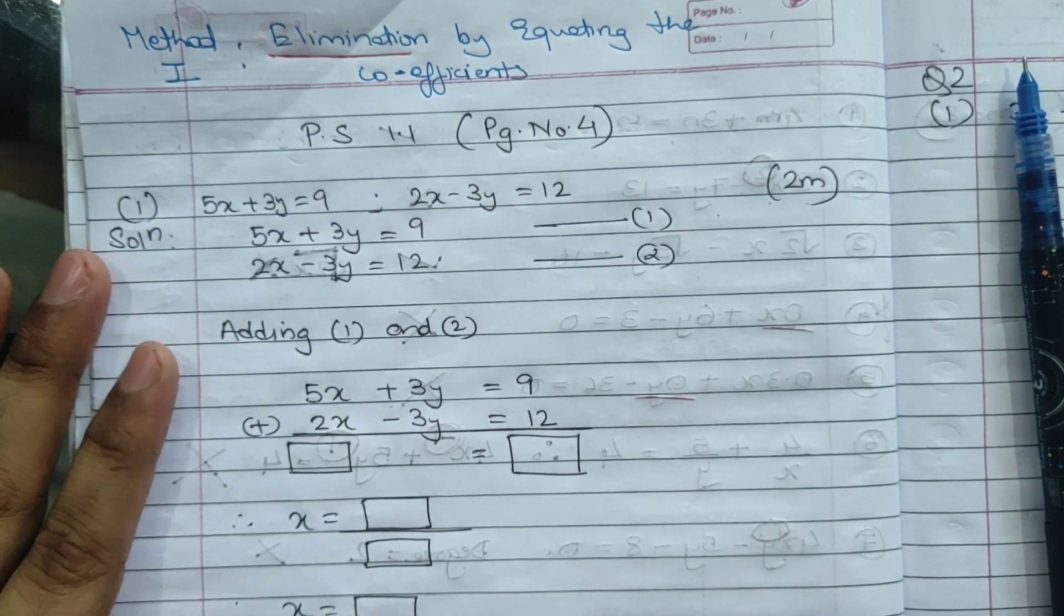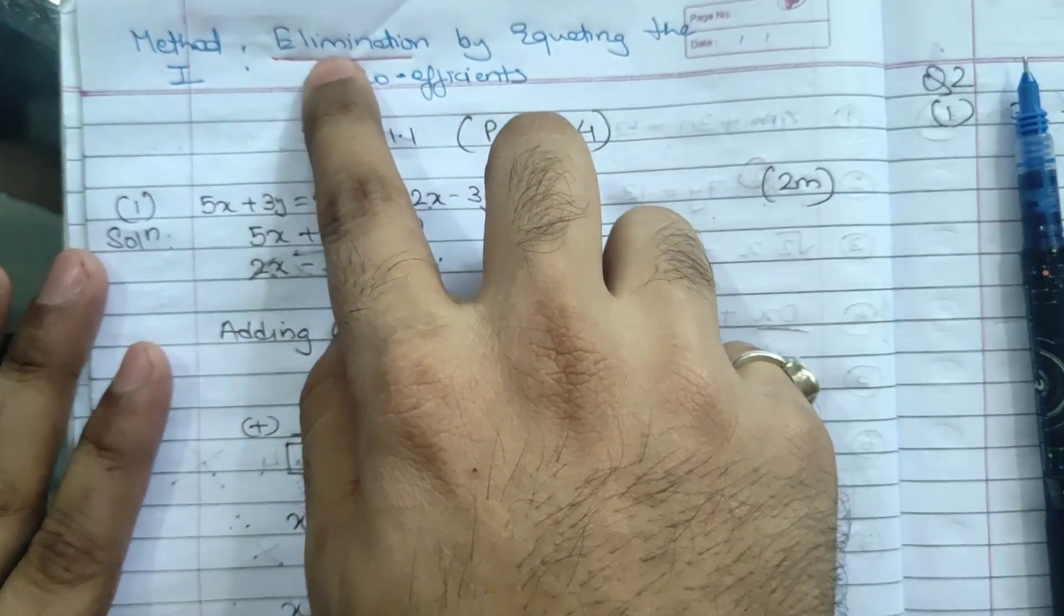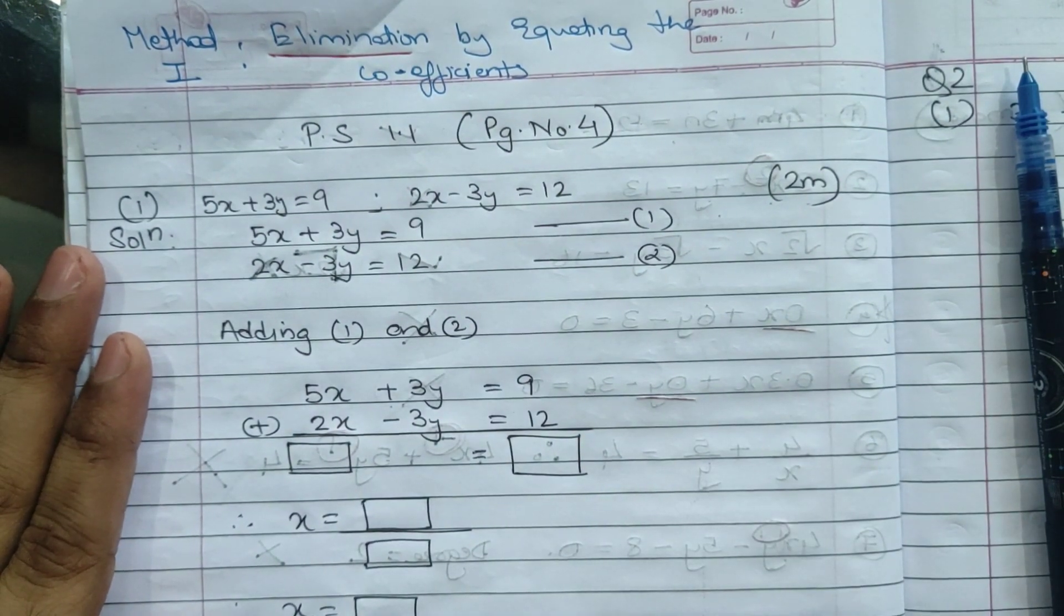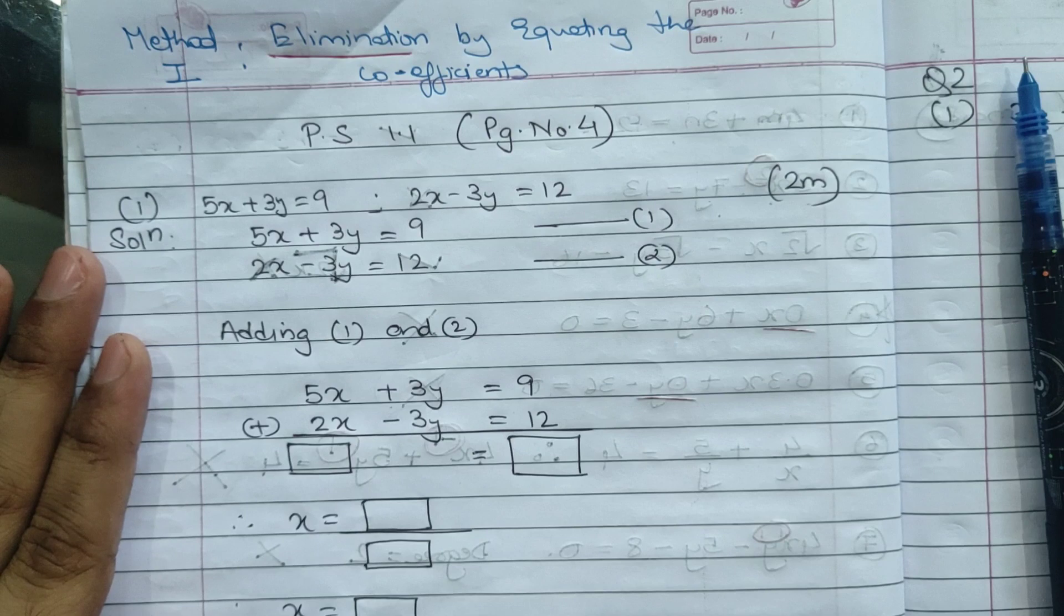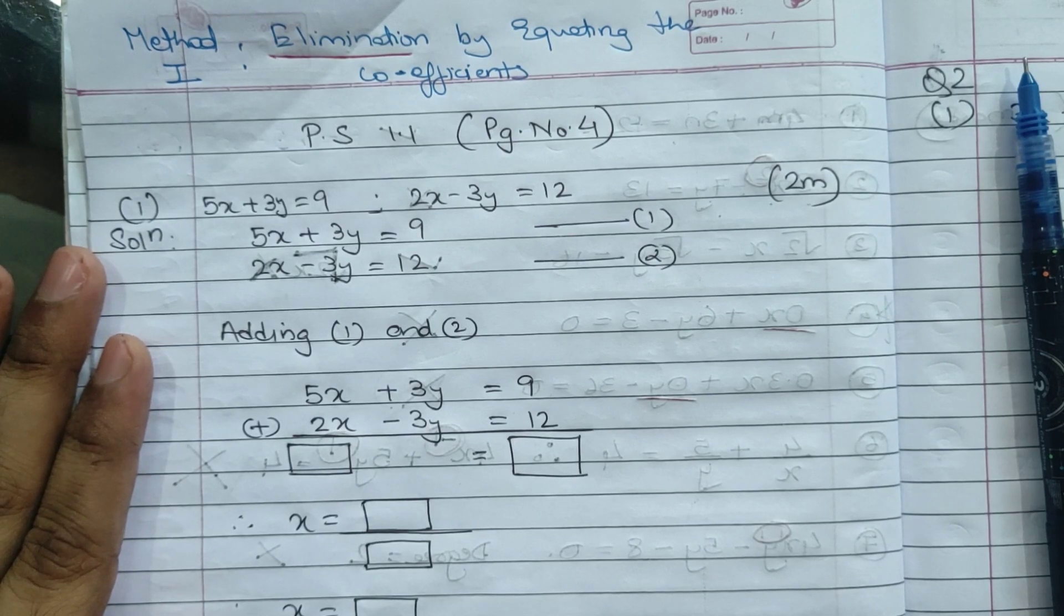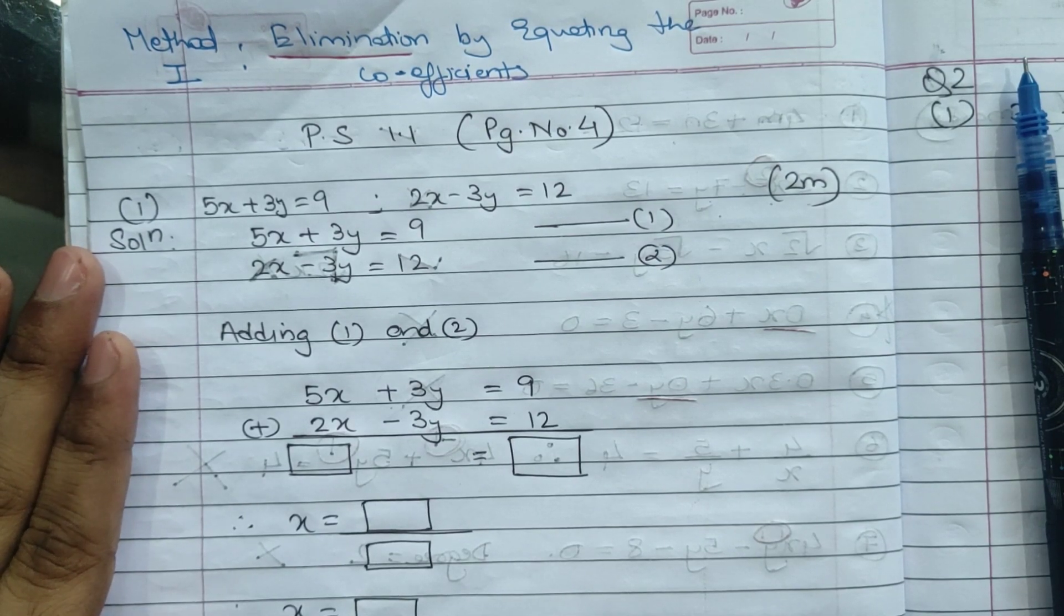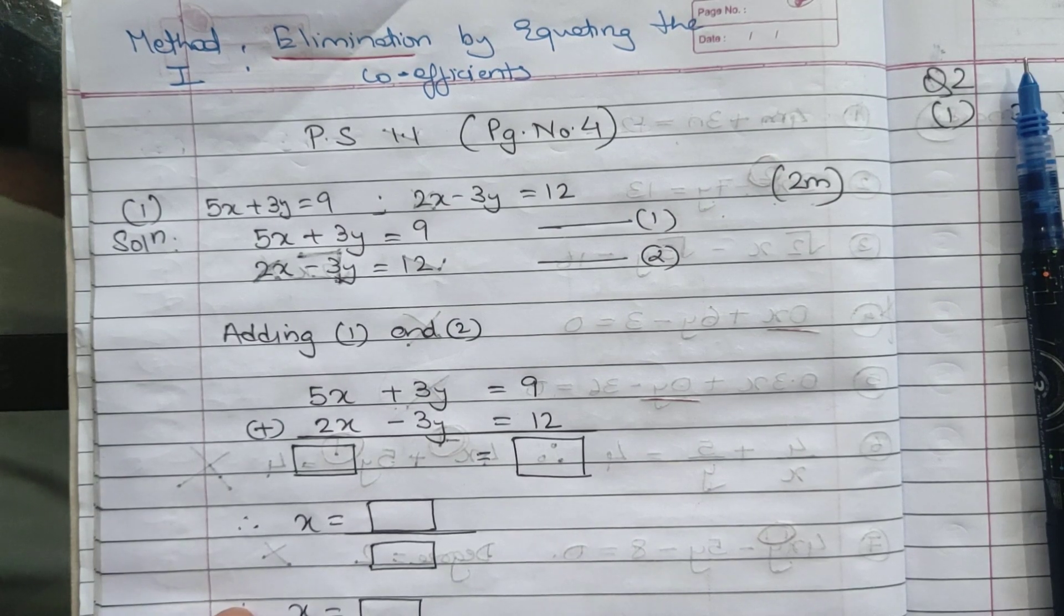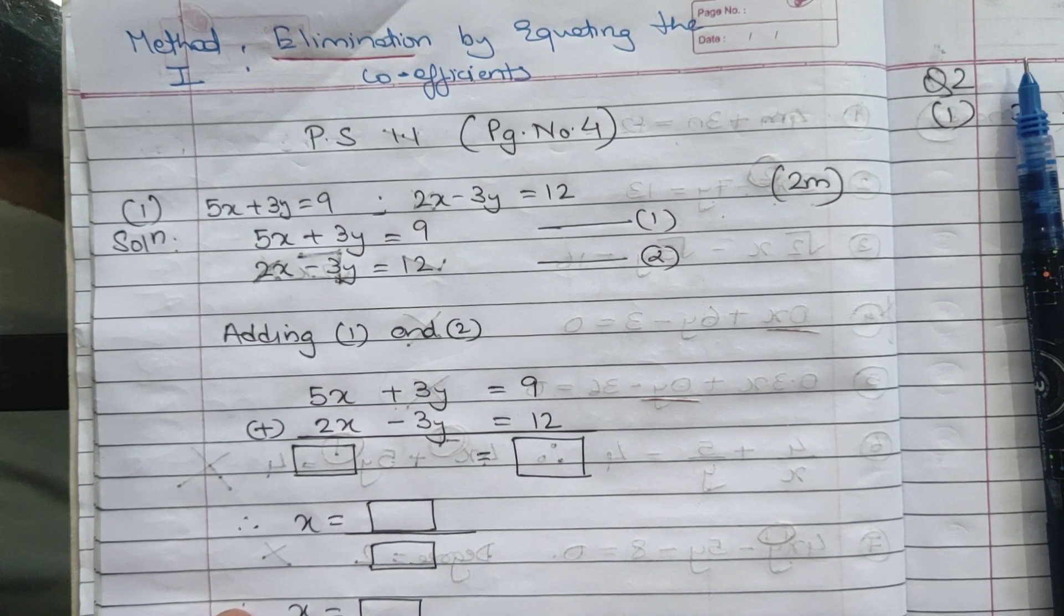Elimination means we want to get rid of the variable which will be the same. For example, if the first equation is 3x and second equation is 3x, we'll remove 3x and 3x. If y is the same, then we'll remove y and get the value of x.